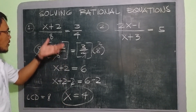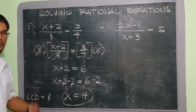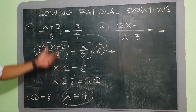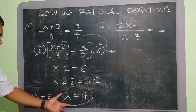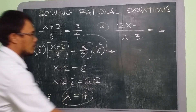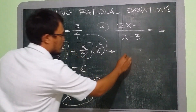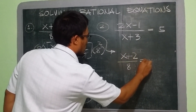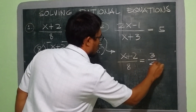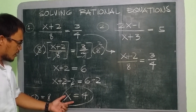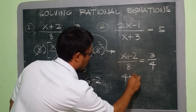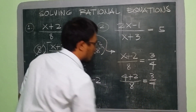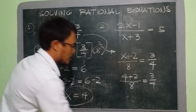Now after finding the value of x which is 4 from our rational equation, we need to check our answer. Using the original equation, we need to plug in the value of x which is 4. We have x plus 2 over 8 is equal to 3 fourths. Now we plug in x equals 4, so this becomes 4 plus 2 over 8 is equal to 3 fourths. So 4 plus 2 is 6 over 8.